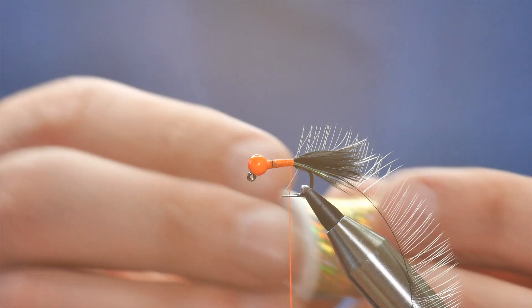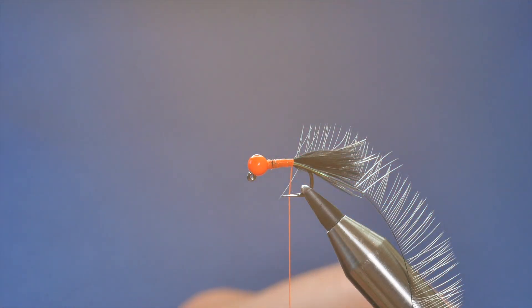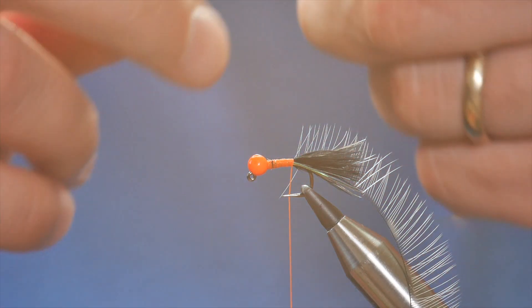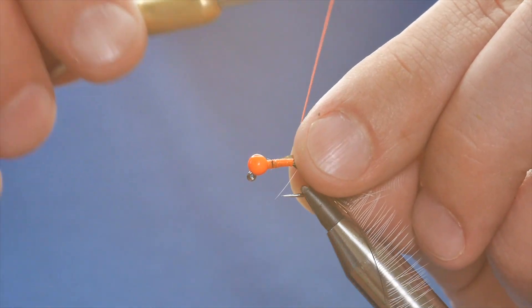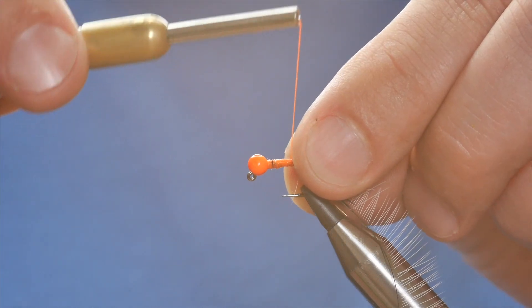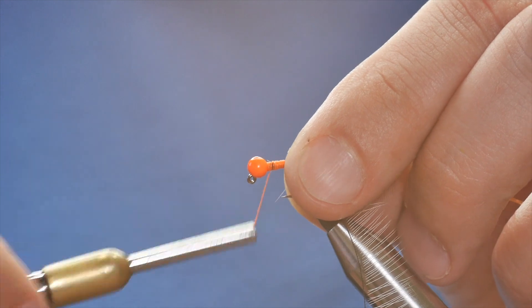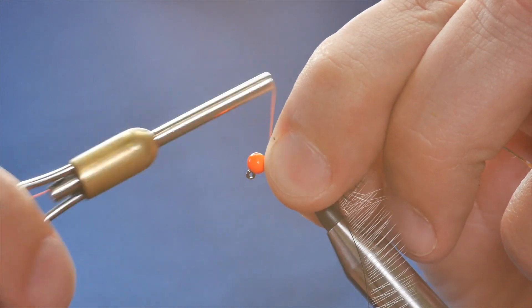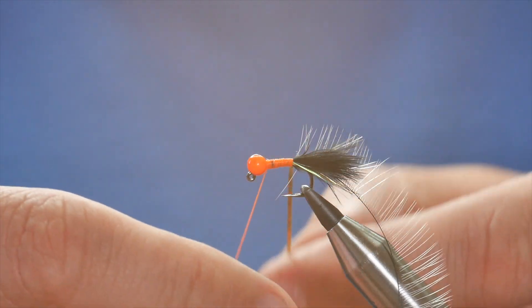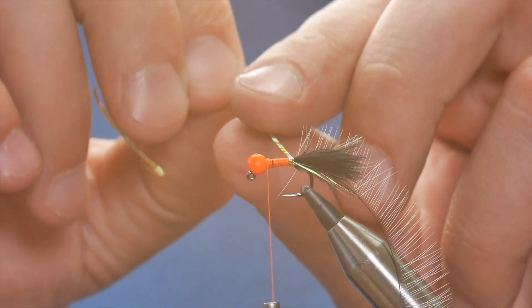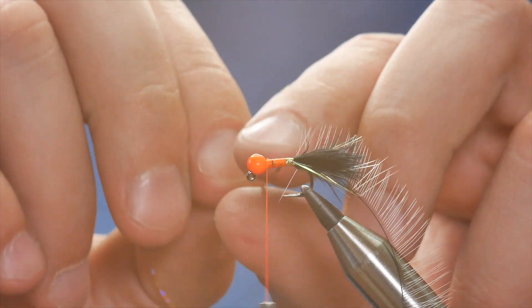Now, the body of the fly, I'm going to use some gold holographic. And I've already taken a little piece of that off which I have here. So I'm going to catch that in on my side. Then just bring it all the way up to the bead.